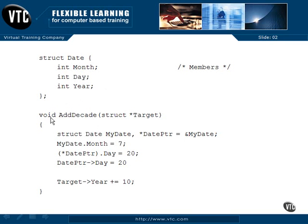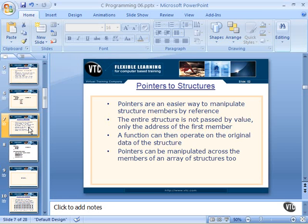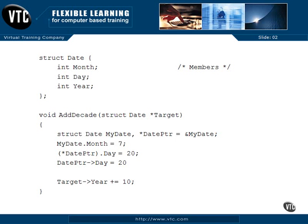This addDecade function does not return anything — it doesn't have to because it takes in a structure pointer. Now, this is a typo right here and it's wrong. I'm going to fix this so that it's correct in our code, because this is a common mistake: I gave the struct target, but I have to give the tag struct date target. Now that's correct. So we have addDecade, and we're going to send in a pointer. Notice the asterisk — it's a pointer to a date structure.